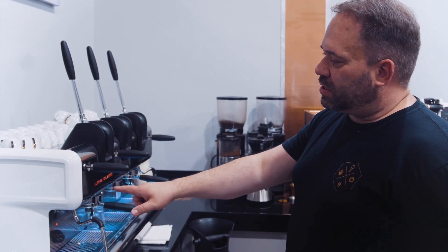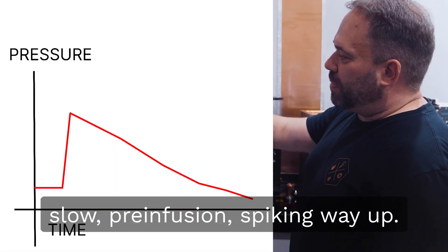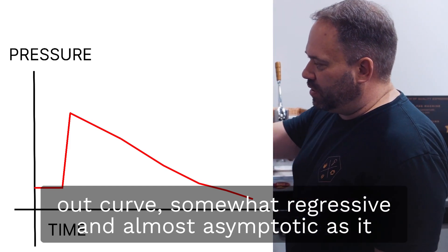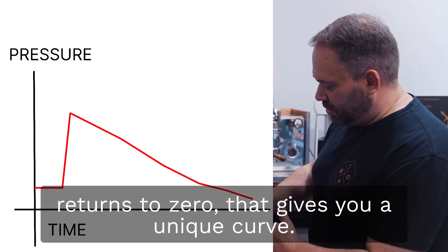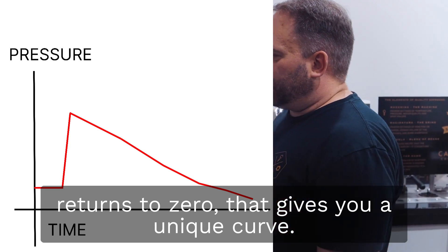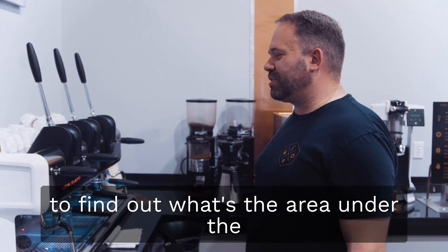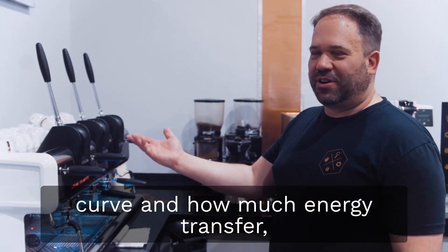With the lever, it's kind of more of a slow pre-infusion, spiking way up, and then it's sort of a long trailing out curve, somewhat regressive and almost asymptotic as it returns to zero. That gives you a unique curve. So break out your calculus when you're trying to find out what's the area under the curve and how much energy transfer is happening.